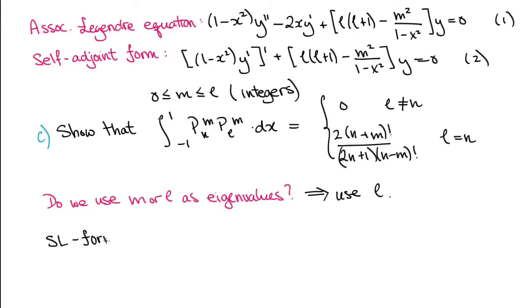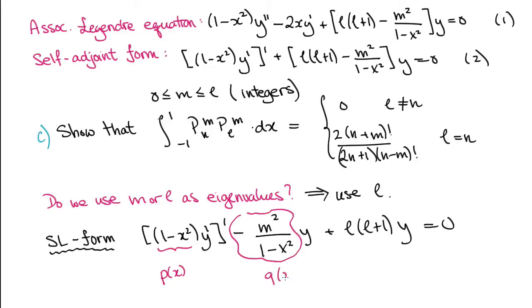Moving onwards now, we put the equation into Sturm-Liouville form, so our P of X is 1 minus x squared, our Q of X is negative M squared over 1 minus x squared, and our R of X is 1, with lambda, the eigenvalue being L times L plus 1.